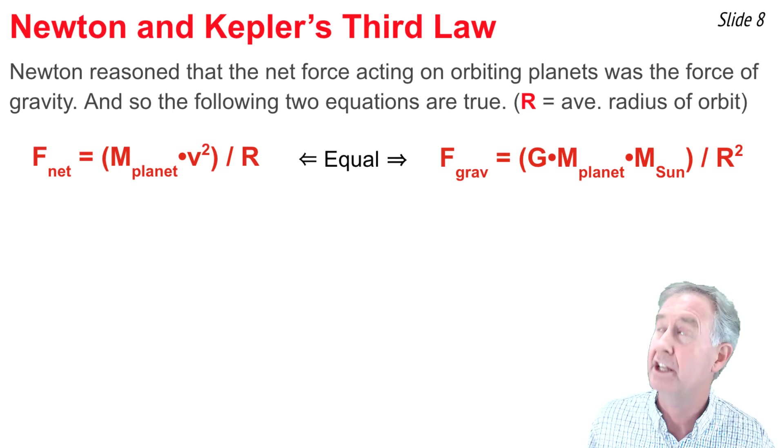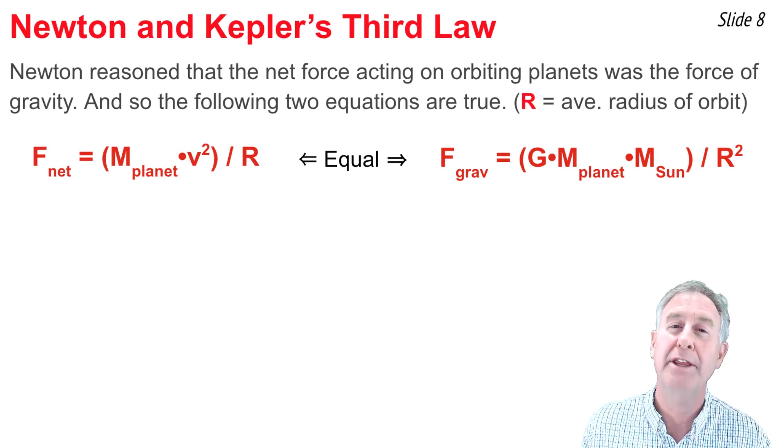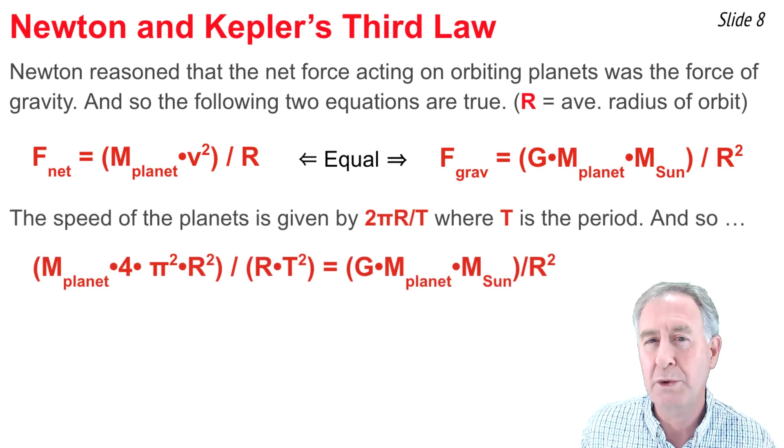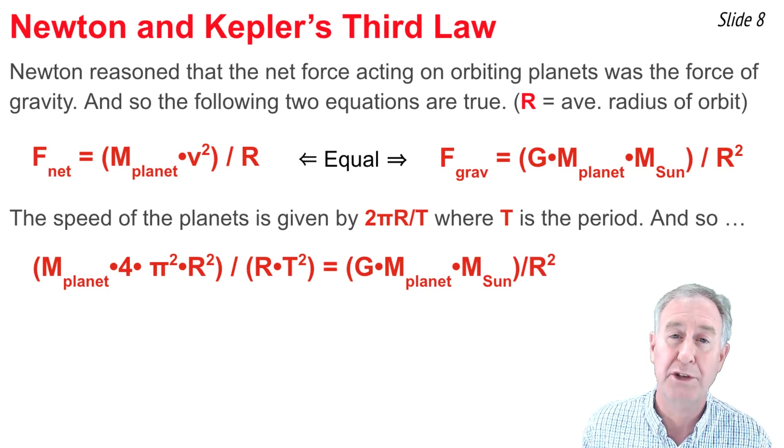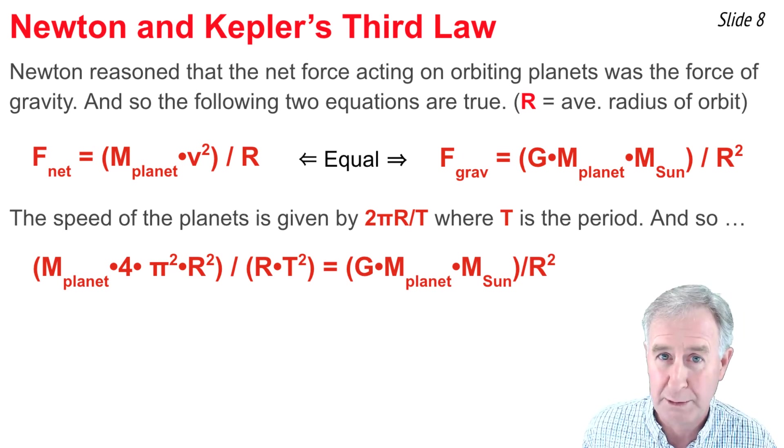That expression for force of gravity is big G times mass of planet times mass of Sun divided by the average distance r squared. Now, we can set these two expressions for force equal to one another. Then, we can take the expression for orbital speed, which is 2πr divided by period. We can square it and put it into the left side force expression.